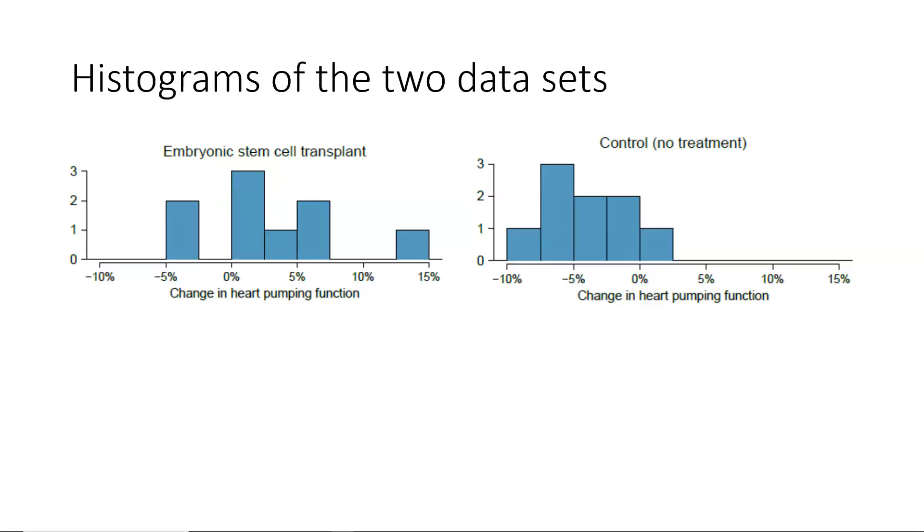Some additional information that was given in the textbook for this problem statement were a couple of histograms. For the embryonic stem cell transplant group, that sample distribution is shown as a histogram, and then for the control group, a similar histogram of the change in heart pumping function is shown on the right.